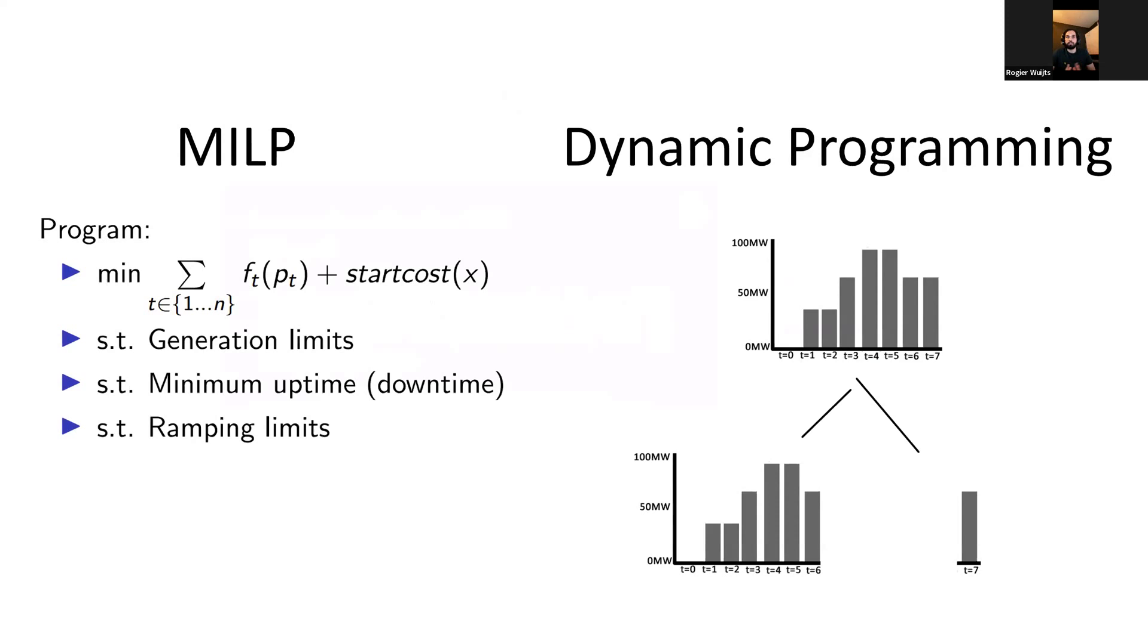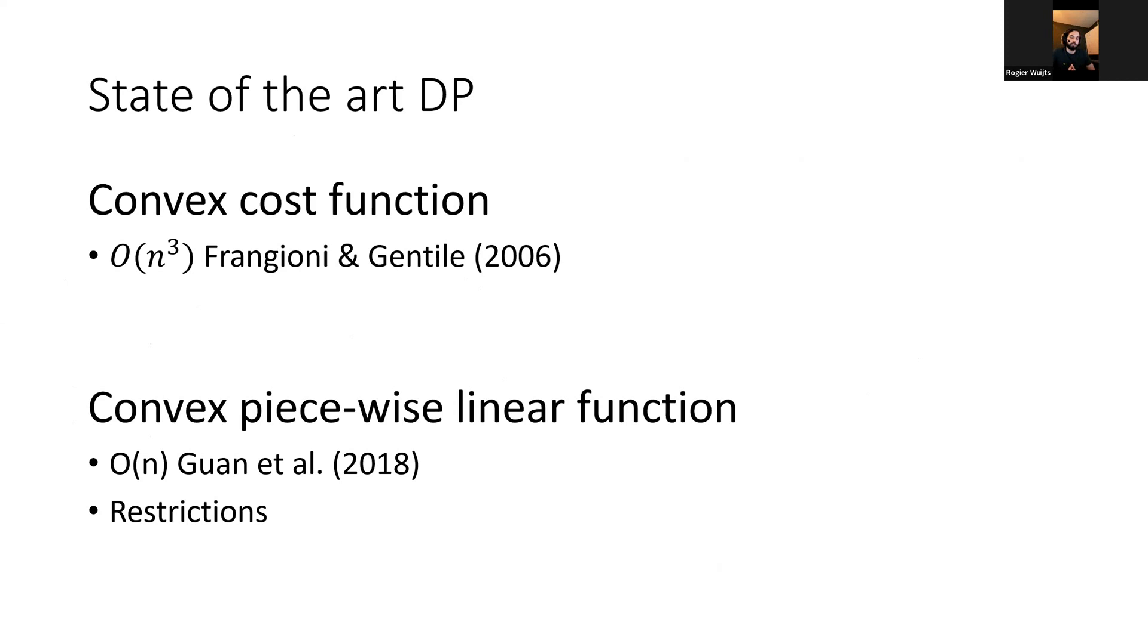There are multiple ways to solve the single unit commitment problem. You could linearize the cost function, produce linear equations and throw it in a solver, and get an answer in reasonable time. But we can do much better, much faster with dynamic programming because it has some nice structure. If you define the state variables carefully, you can split up the difficult problem into smaller problems and use information from the smaller schedules to make the whole schedule. The state of the art for any convex cost function is O(n^3) time where n is the amount of time steps. This was done by Frangioni and Gentile in 2006.